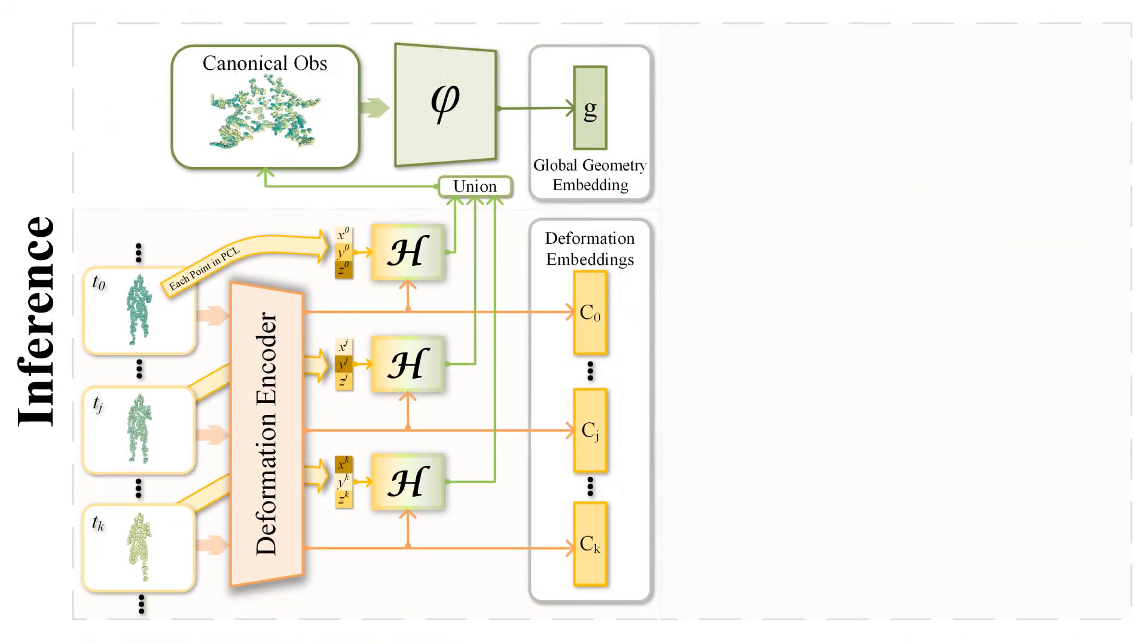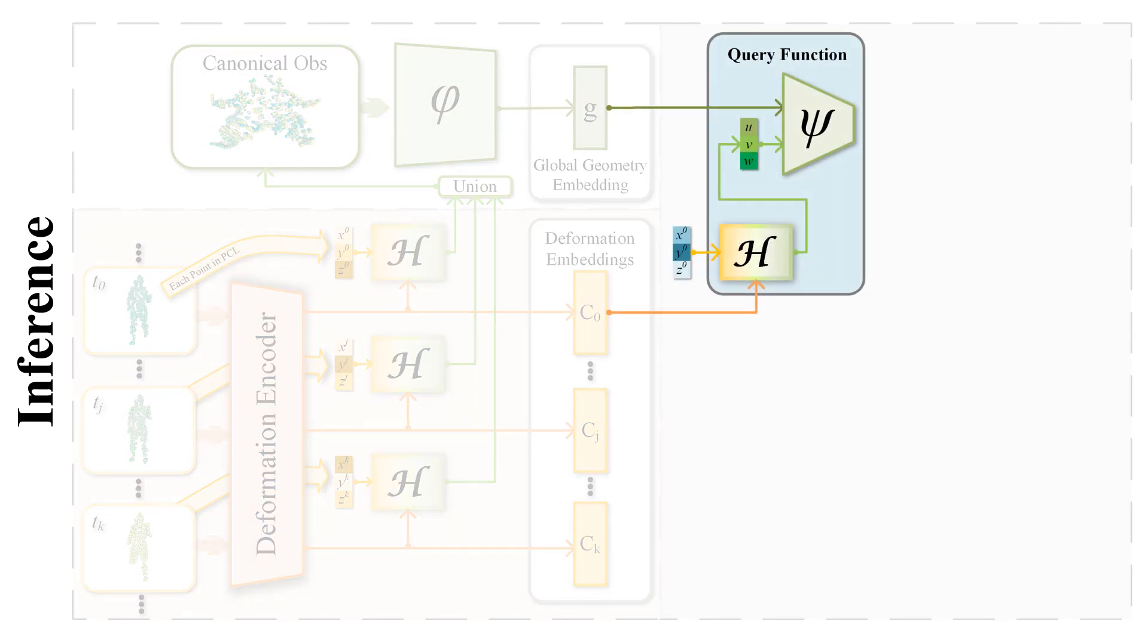During inference, the encoding part works the same as the training phase, and we obtain the global geometry embedding as well as the per-frame deformation embedding. Then we regard the neural homeomorphism as well as the canonical occupancy decoder as a whole query function, so that we can march the first deformed frame and extract the mesh in the first frame.